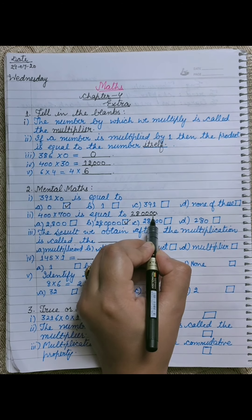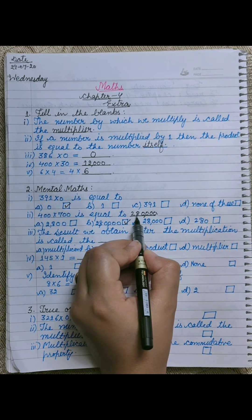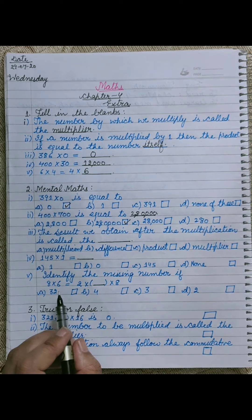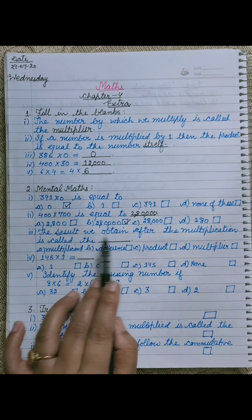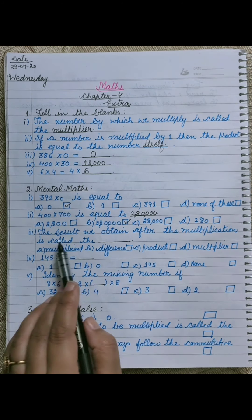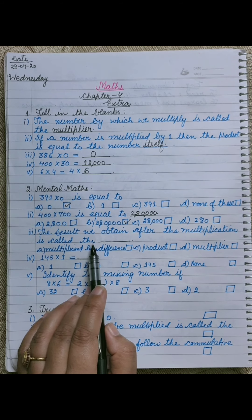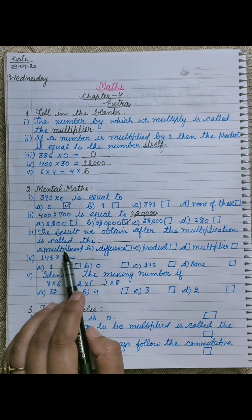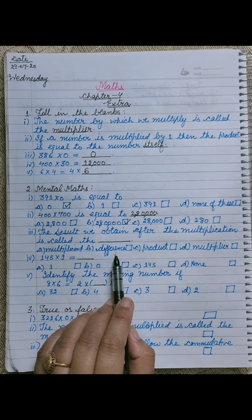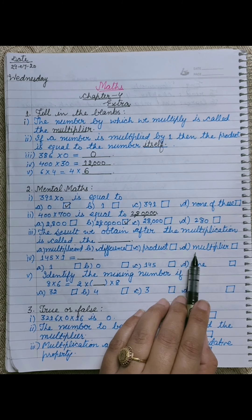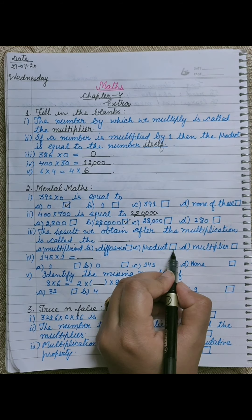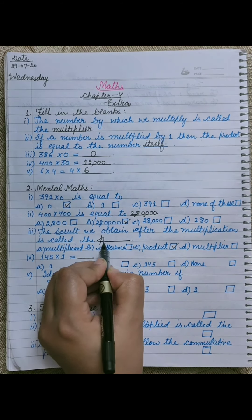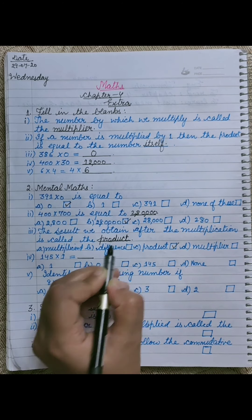That is 2,80,000. Next is: the result we obtain after the multiplication is called the dash — jab hum 2 numbers ko multiply karte hain to uska result aata hai, usko kya bolte hain. We have 4 options: multiplicand, difference, product, multiplier. The answer is called product — P-R-O-D-U-C-T.